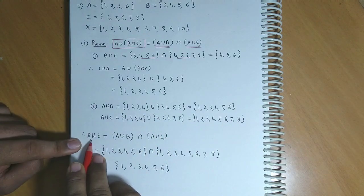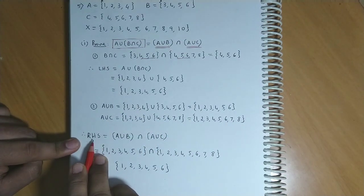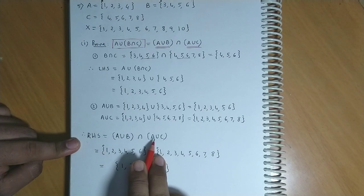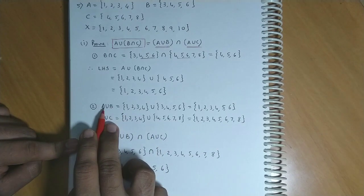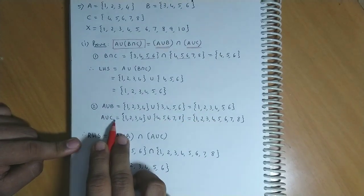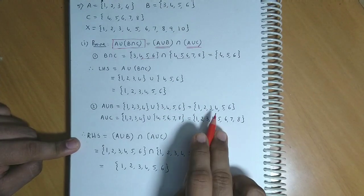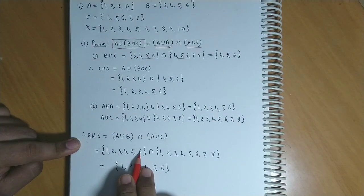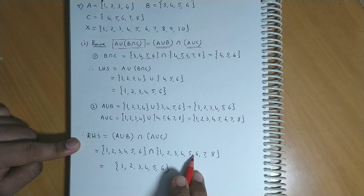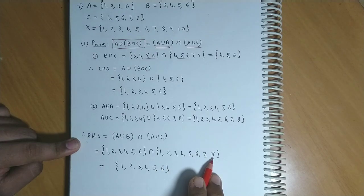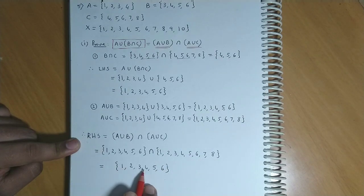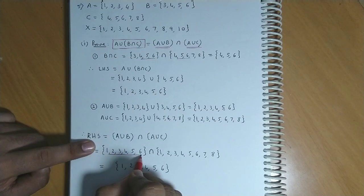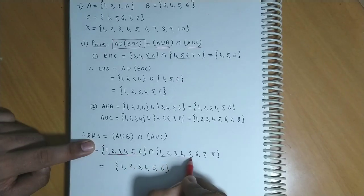Now we can obtain the right hand side. Ab right hand side hai A union B intersection A union C. Toh A union B hameh mil gaya {1, 2, 3, 4, 5, 6} aur A union C bhi hameh obtain kar liya {1, 2, 3, 4, 5, 6, 7, 8}. Ab in doonoh sets ka intersection karna hai. So {1,2,3,4,5,6} intersection {1,2,3,4,5,6,7,8}. Toh jo common elements hai: {1, 2, 3, 4, 5, 6}.